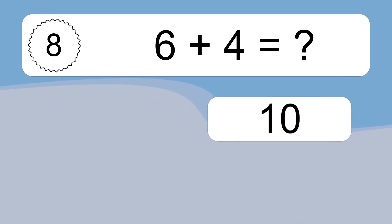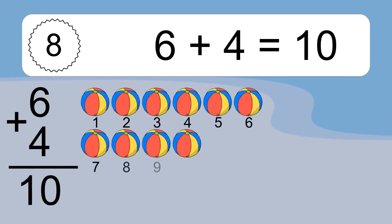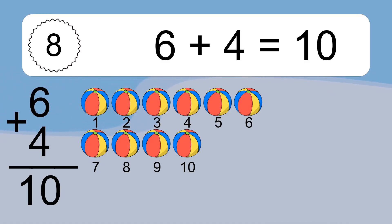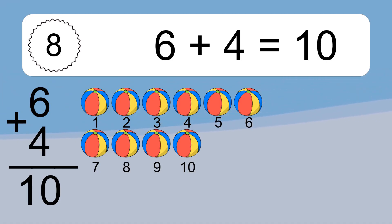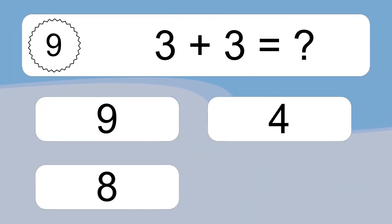6 plus 4 equals what? 6 plus 4 equals 10. Let's count it: 1, 2, 3, 4, 5, 6, 7, 8, 9, 10.